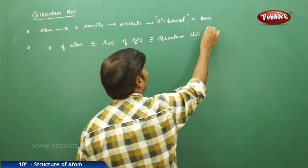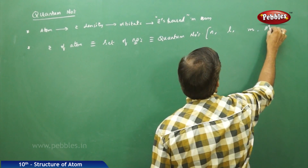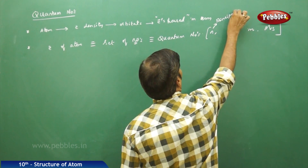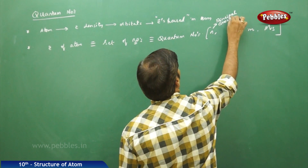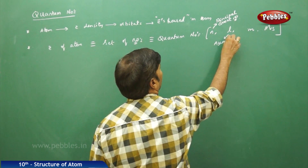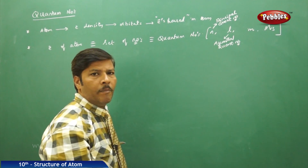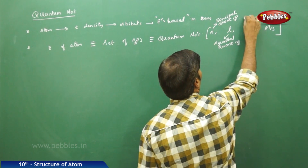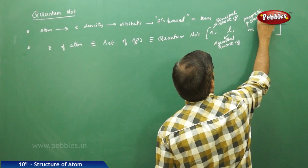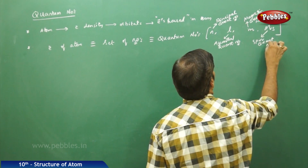These quantum numbers are designated by n, l, and m — and sometimes m sub s. When you say n, it is the principal quantum number. When you say l, it is the azimuthal quantum number. When you say m, it is the magnetic quantum number, and when you say s, it is the spin quantum number.